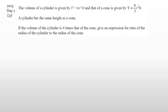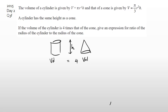The volume of a cylinder is given by V equals pi R squared H. The volume of a cone is pi r squared H over 3. The cylinder has the same height as the cone. If the volume of the cylinder is four times that of the cone, give an expression for the ratio of the radius of the cylinder to the radius of the cone. So: volume of cylinder equals 4 times volume of cone.